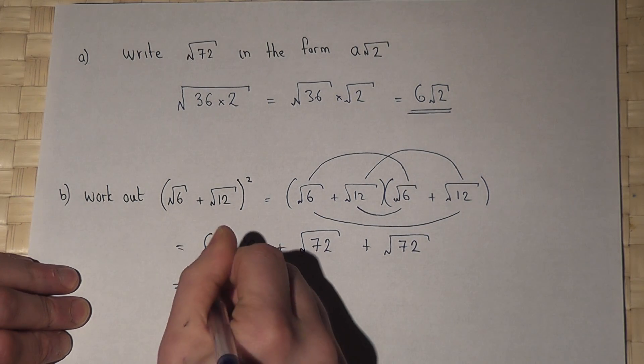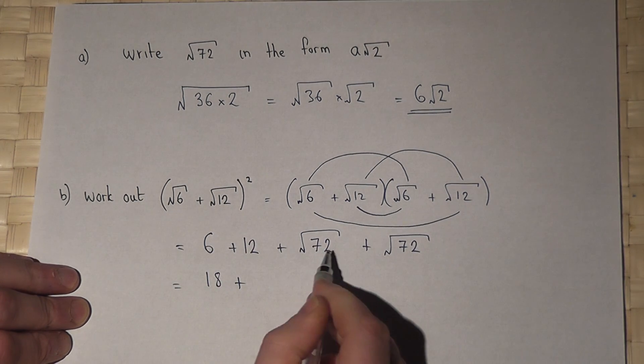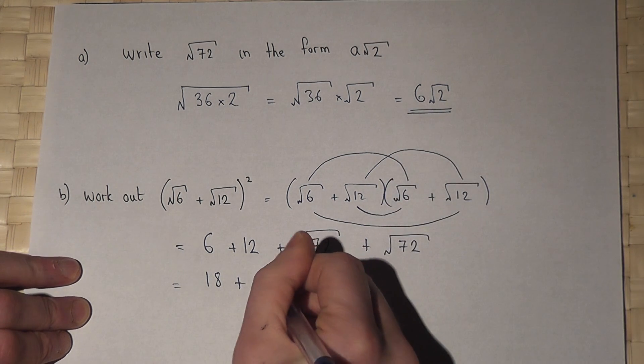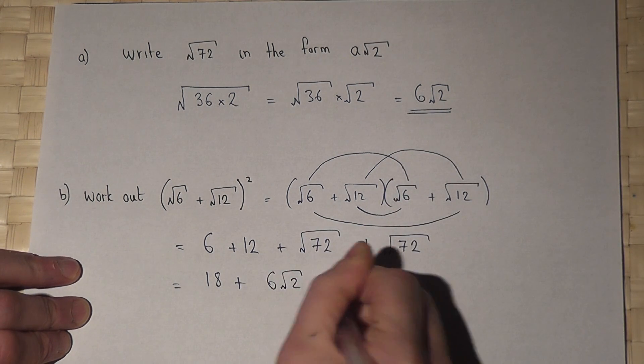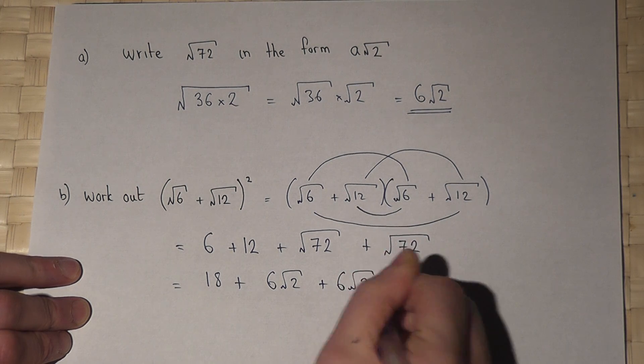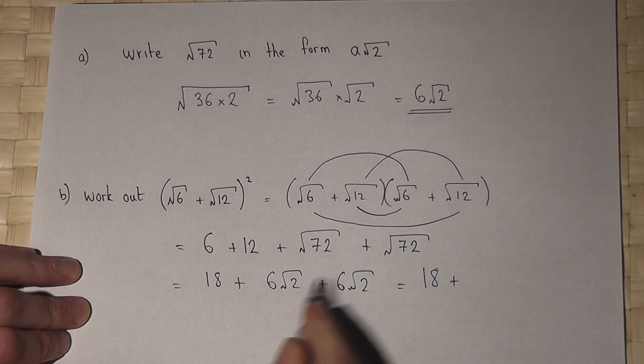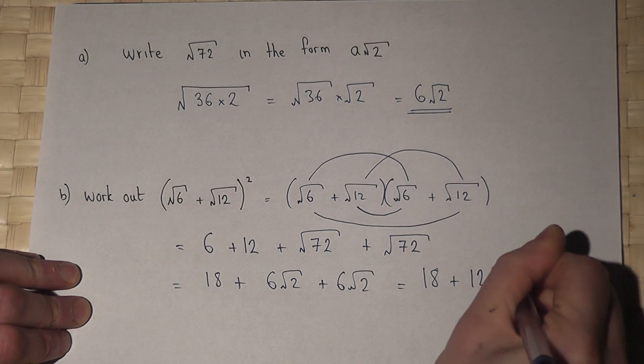Now 6 plus 12 is 18. But root 72 from before is 6 root 2. So it's 6 root 2 plus 6 root 2. And that just means 6 plus 6 is 12, 12 lots of root 2.